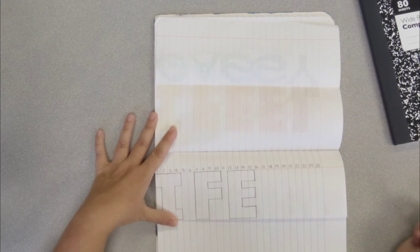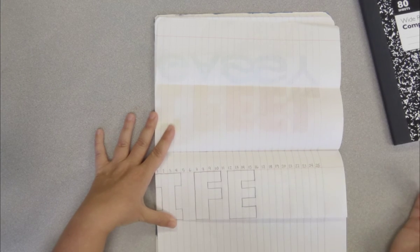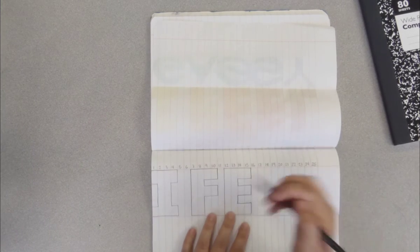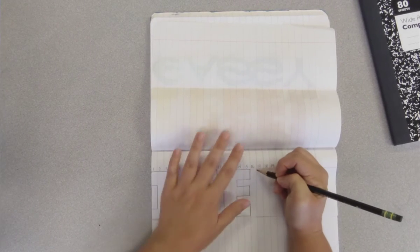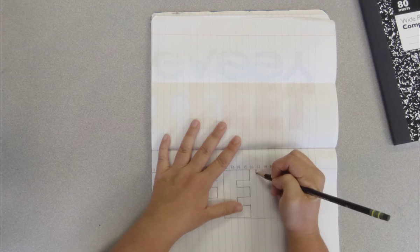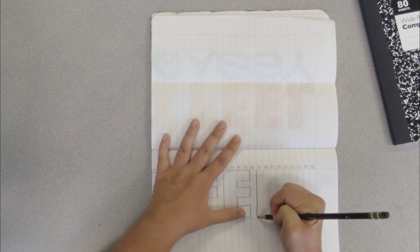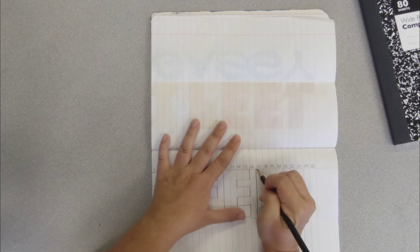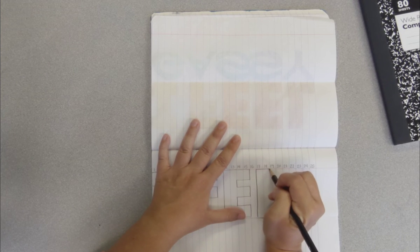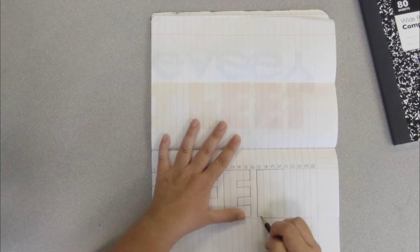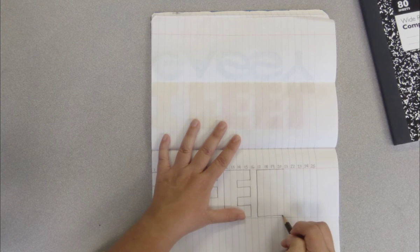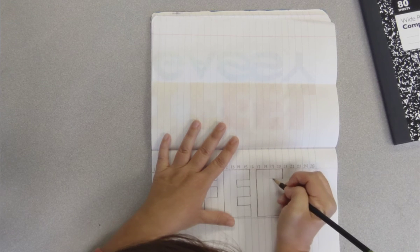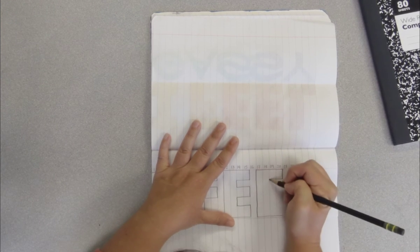Now we've got to do another E because this is the word I feel. So skip over line 16, between 16 and 17 we're gonna draw down along that line, and then four over. I'm trying to create exactly the same E as we did before so it looks nice and even.